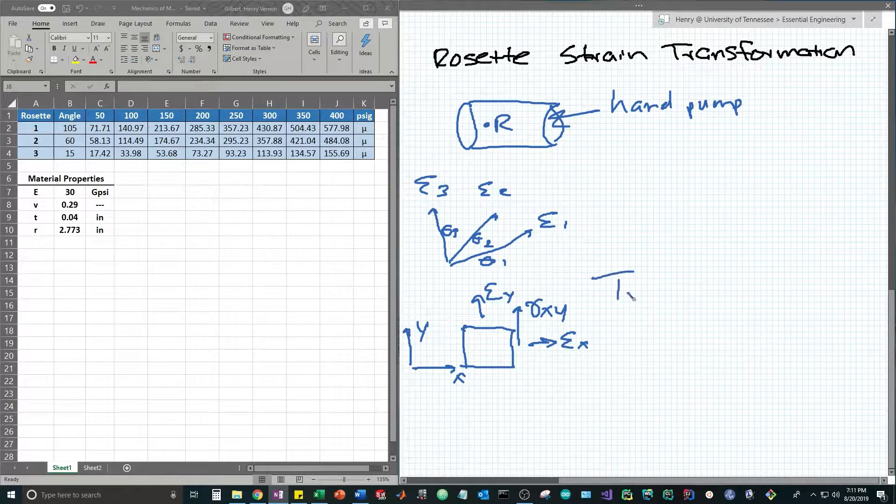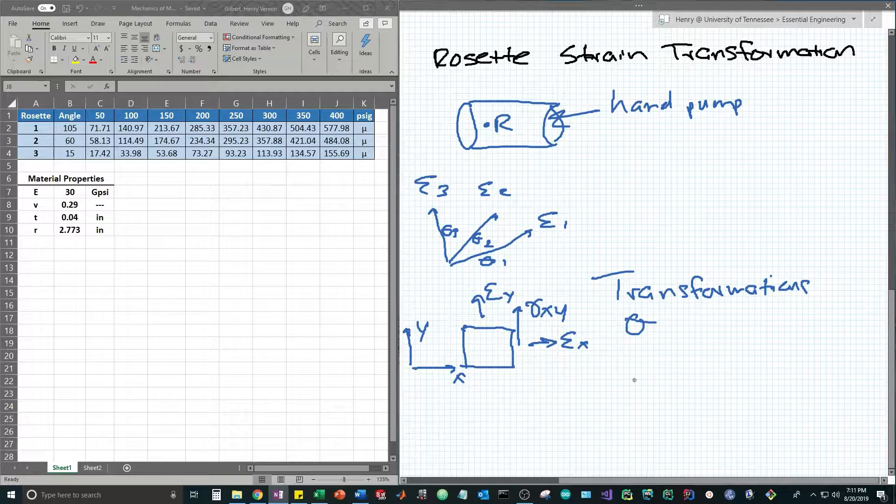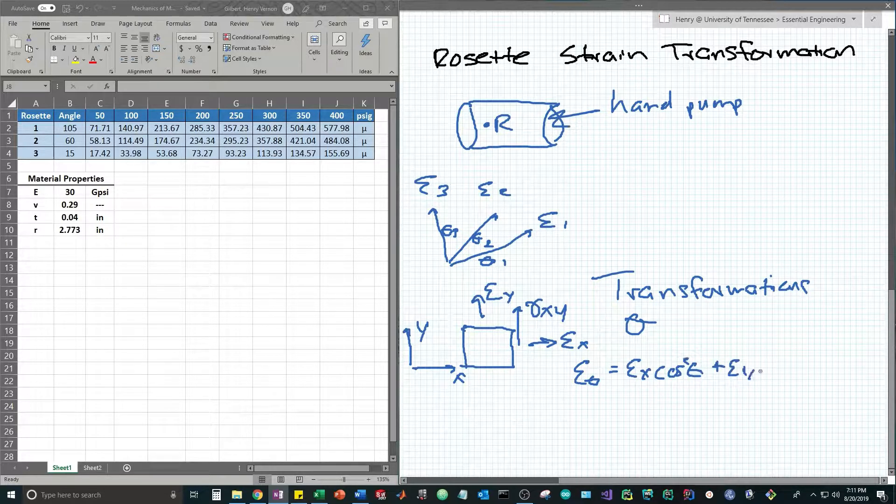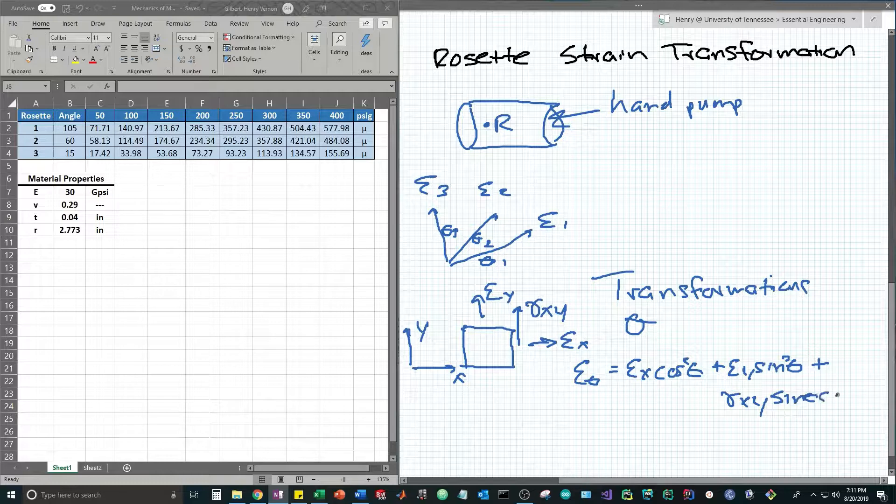Now the concept of a transformation tells us that if we rotate this coordinate system at any angle theta, we can find the resultant state of strain based on the equation epsilon of theta equals epsilon x cosine squared theta plus epsilon y sine squared theta plus gamma xy sine theta cosine theta.